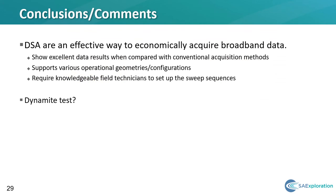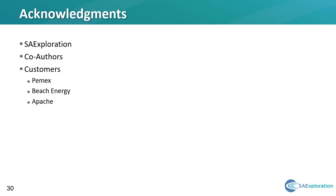Some conclusions and comments: we found distributed source arrays to be an effective method for acquiring broadband data. The data examples show excellent results when compared to conventional full broadband acquisition methods. The method supports various geometries or configurations, as shown by the Symphony accordion example, and as such can be configured or optimized to our project needs. For vibrator implementations, we require knowledgeable field technicians, as setting up the sweep sequences in the electronics is critical for a successful project. Processing is a little more involved with this method and could really be a paper on its own. As for dynamite implementations, we've had some interest in doing a test but haven't found a suitable project location. I'd like to thank the management at SA Exploration for allowing me the time and resources to put this presentation together, and my co-author, and especially the customers that provided the data examples: Pemex, Beach Energy, and Apache.